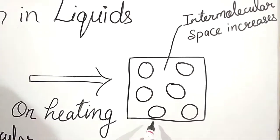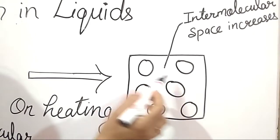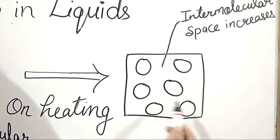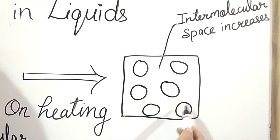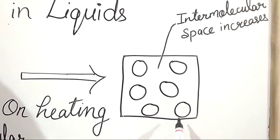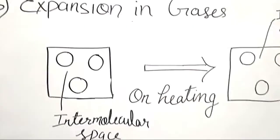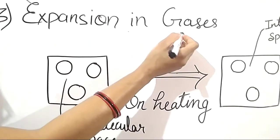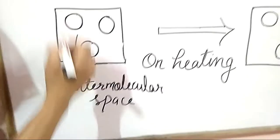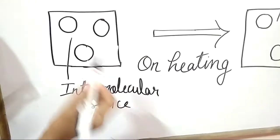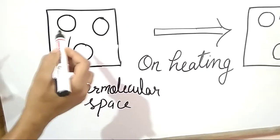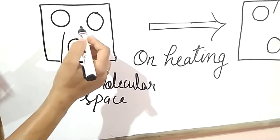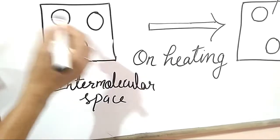So the molecules in liquids can vibrate and move apart from each other, occupying more space than solids. Now, in gases, the molecules are more loosely bound, and the space between the molecules is more than in both solids and liquids.